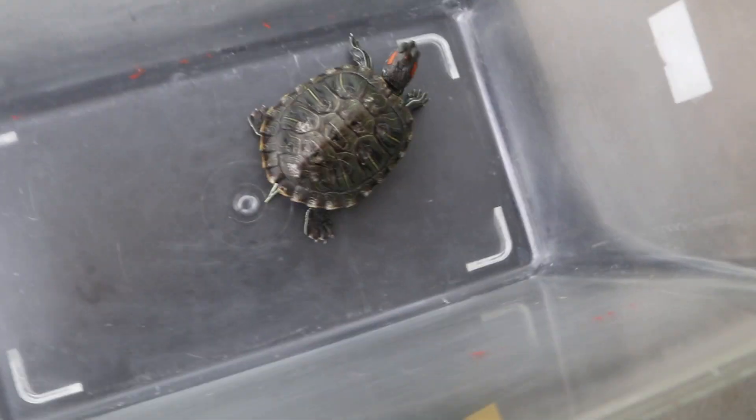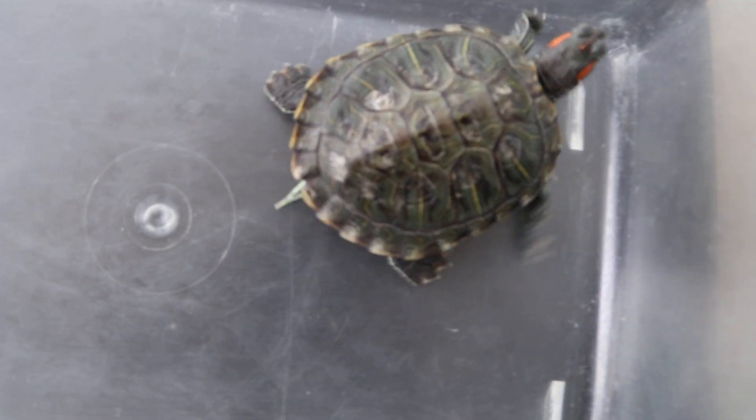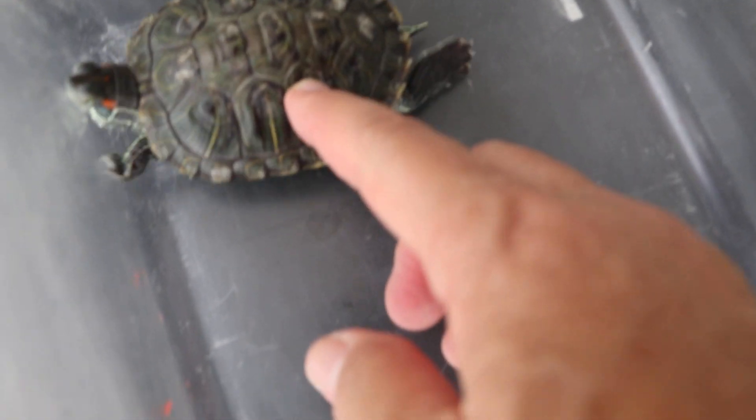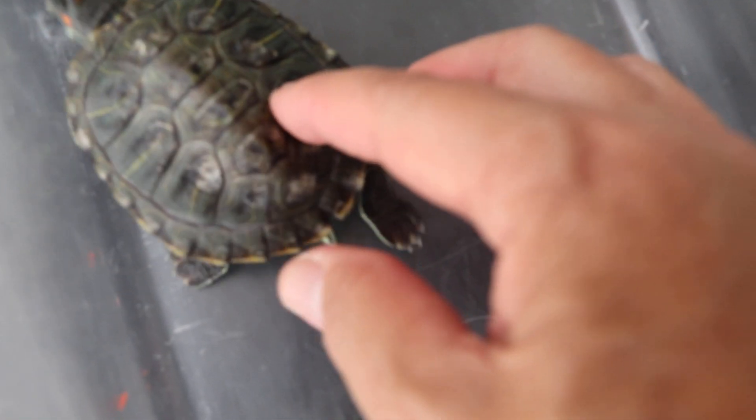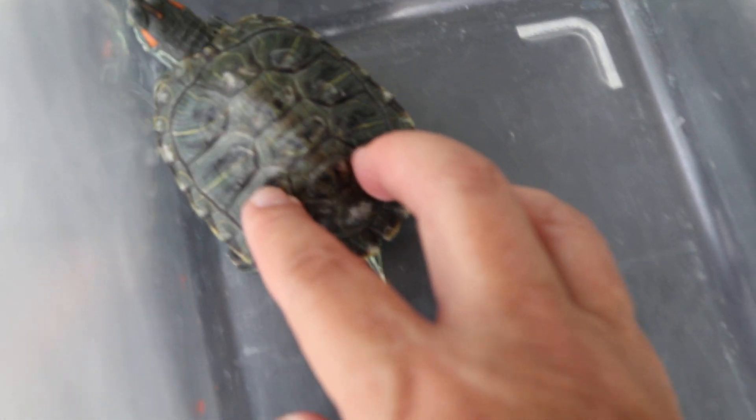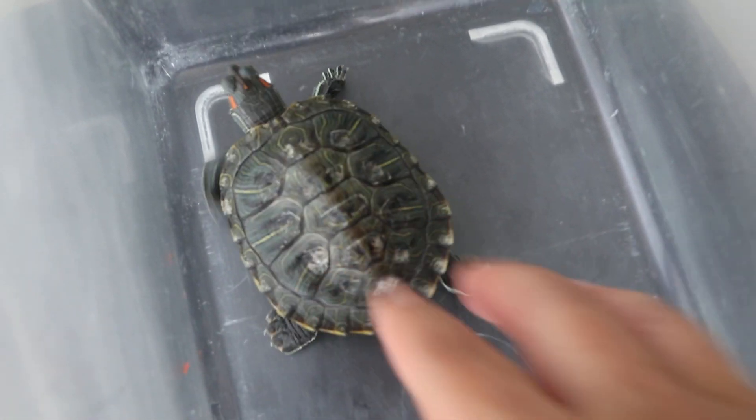This is a red-eared slider. It has actually very bad shell rot, but it's not obvious. As you can see, the white spots are there and they are dents. It's dented. This is why it's dented - that means there are some infections under the shell. It's been going on for some time, and that's why it's losing appetite.